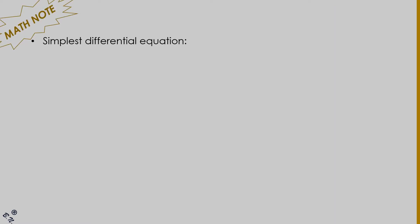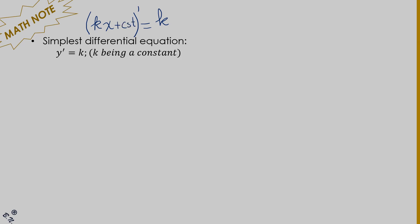The easiest differential equation is y-prime equals k, where k is a constant. To solve it, you don't need complicated notation — simply ask yourself mentally: what do I derive to get k? You think about the variable first. In mathematics, the main variable is x. So what do I derive in x to get k? Mentally, I get kx, since deriving kx gives k. But I can also add a constant, since a constant upon deriving cancels out.